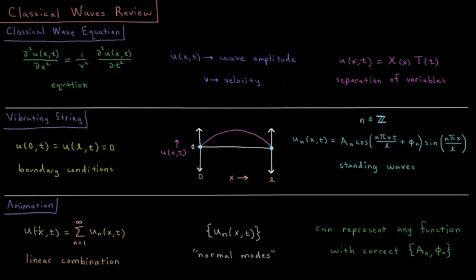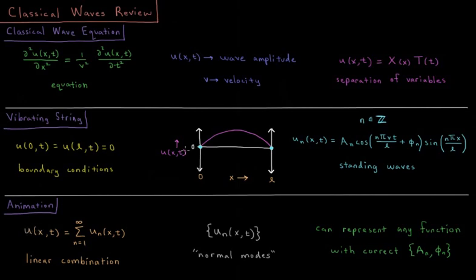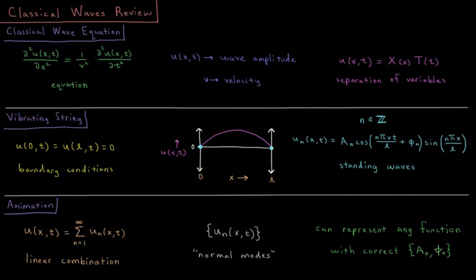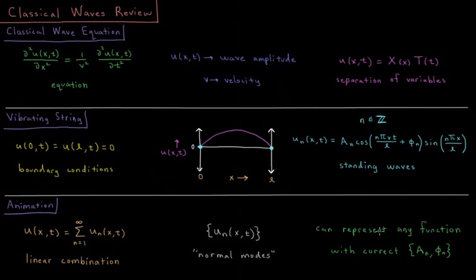Then we have a video showing an animation of this, how in general you have a linear combination of these individual standing waves to get any wave you want from these normal modes. With the correct choice of amplitude and phase factor, we can represent any function with the correct boundary conditions obeyed. This is the review of the classical waves chapter.